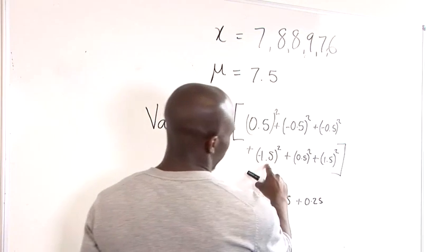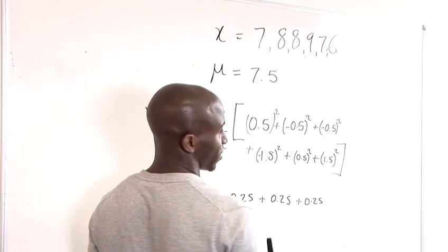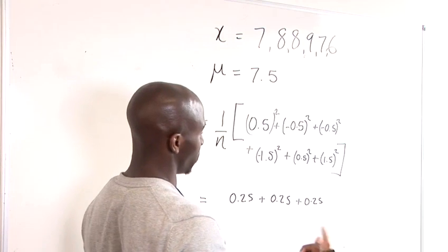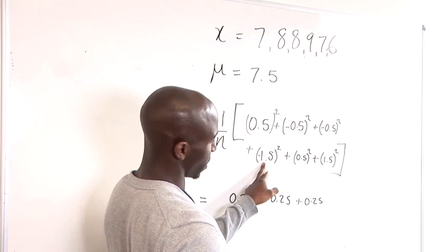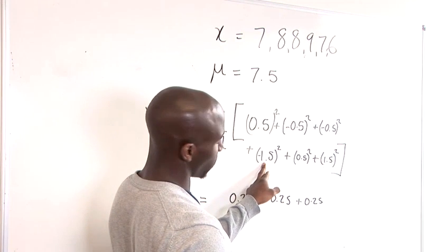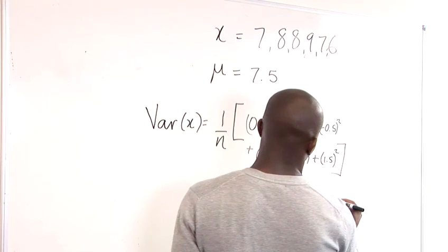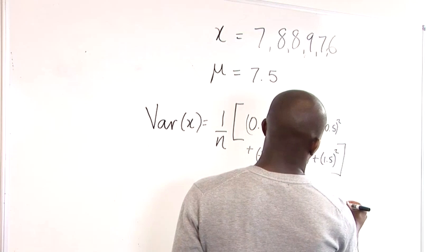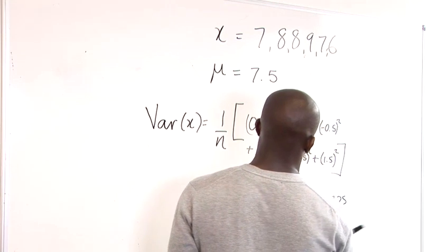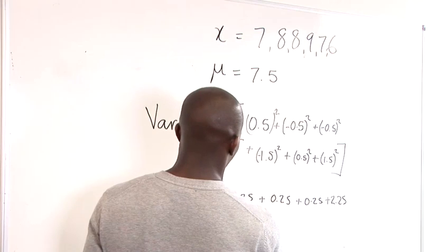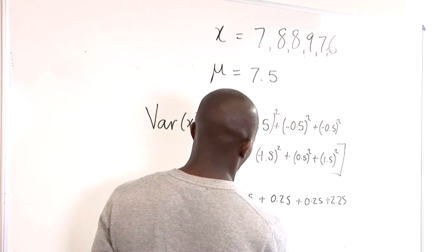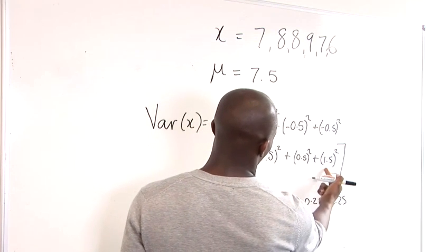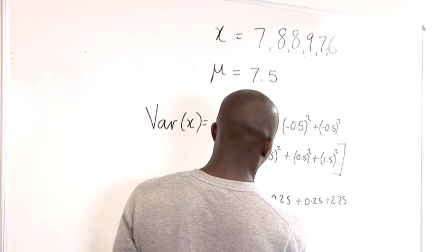Now, if you think about 1.5, you can say to yourself 1.5 squared would be 2.25, so that's just pretty much just going to be 2.25. Okay, 2.25, and again you've got 0.25, and again you've got 2.25.